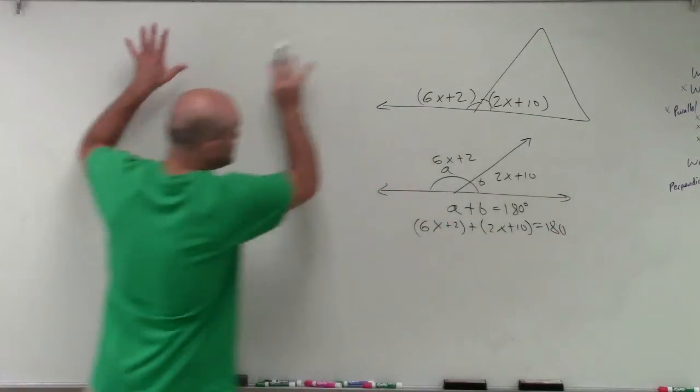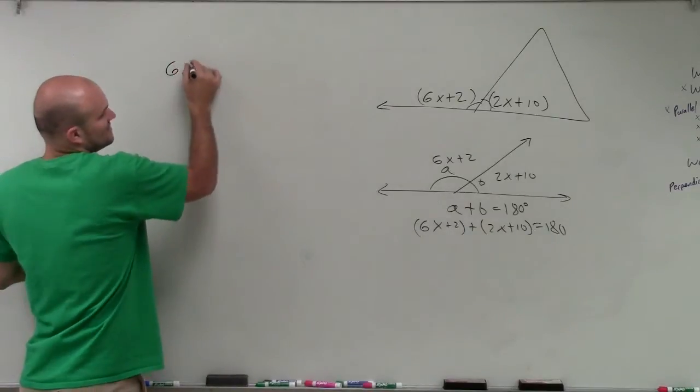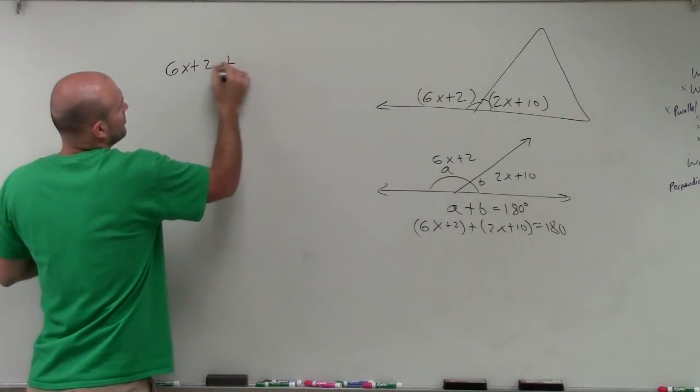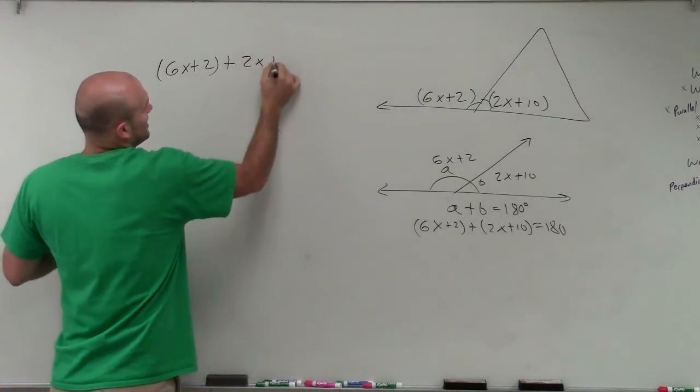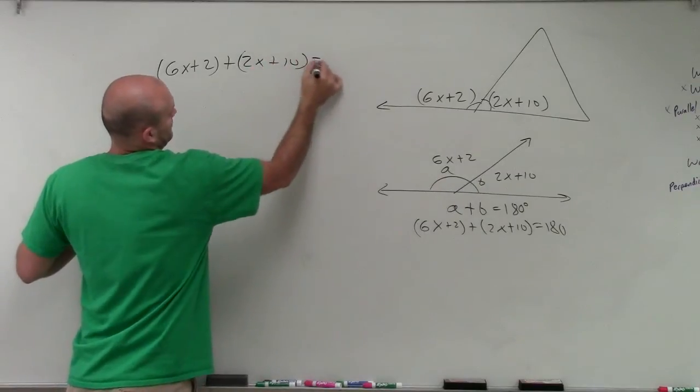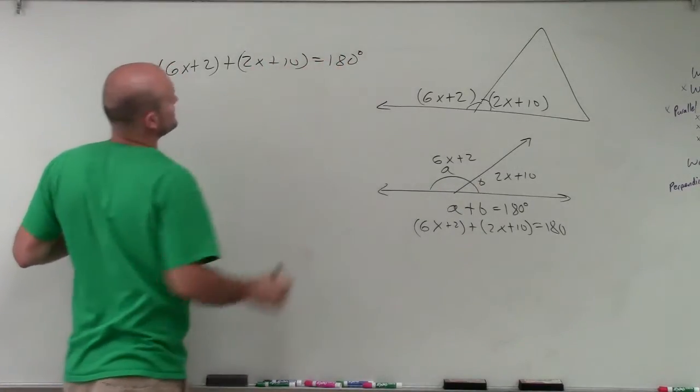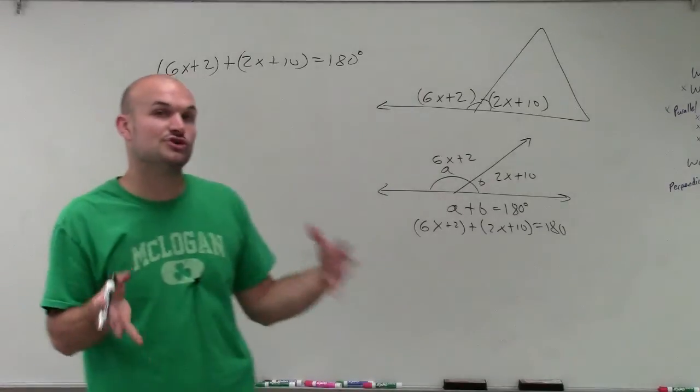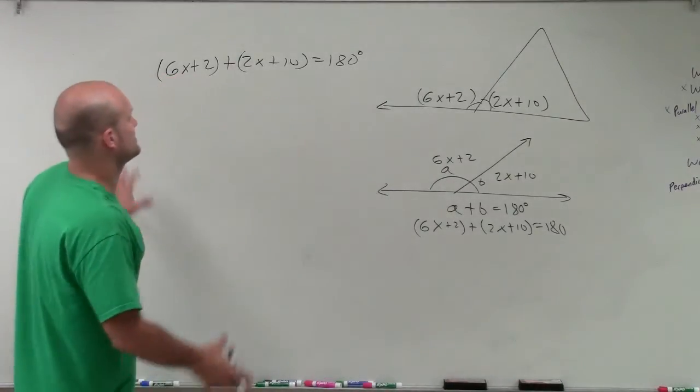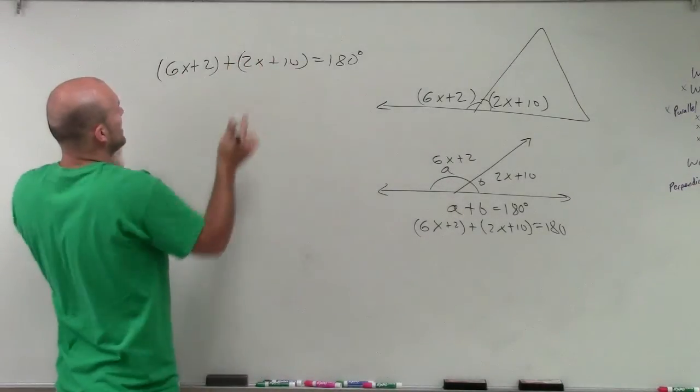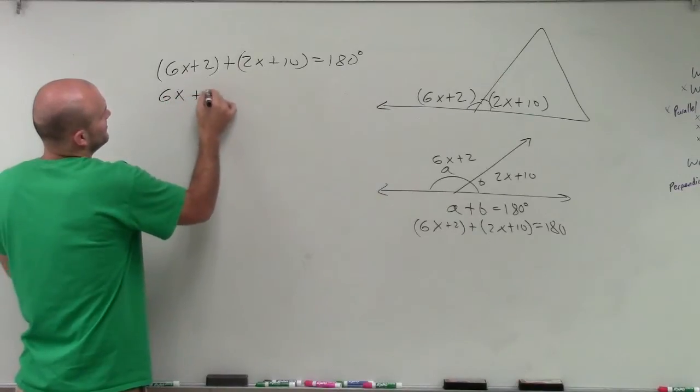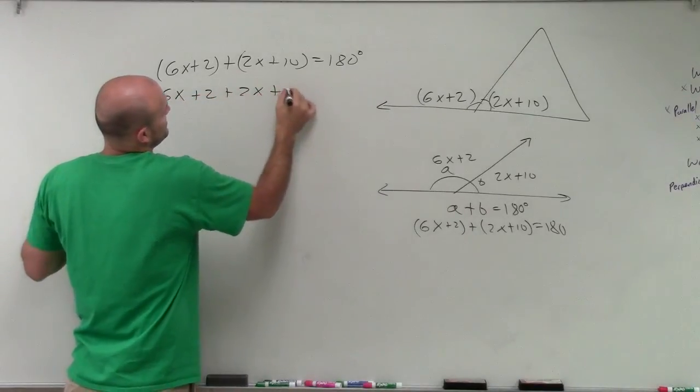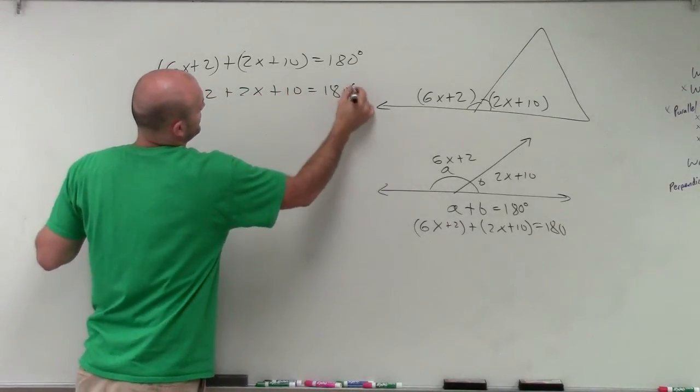So let's write the equation over here and solve. So I have 6x plus 2 plus 2x plus 10. Now I use these parentheses to kind of preserve each one of these angles. But now I can get rid of them and combine like terms.